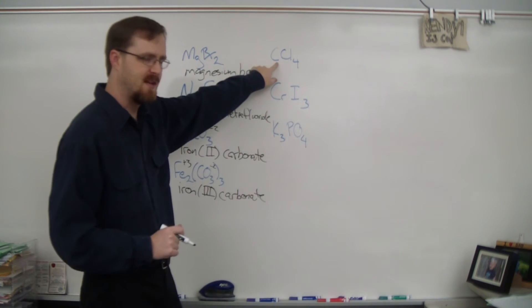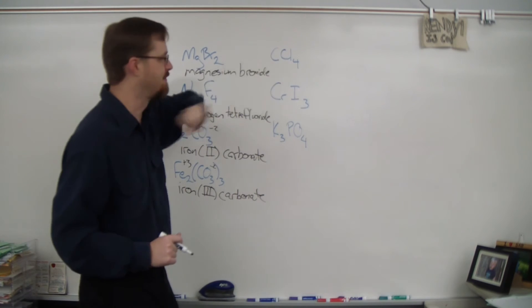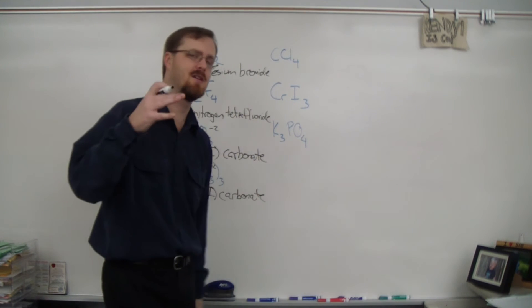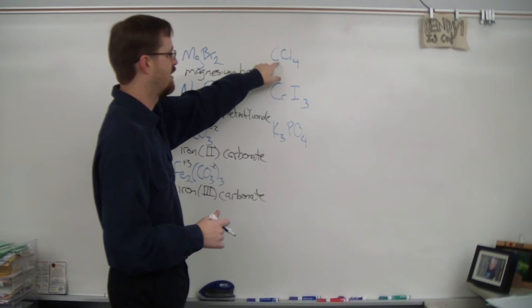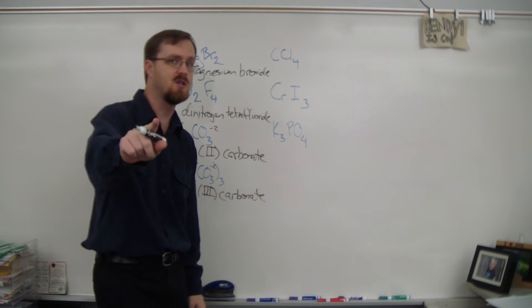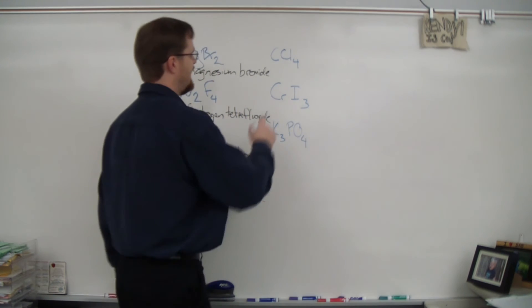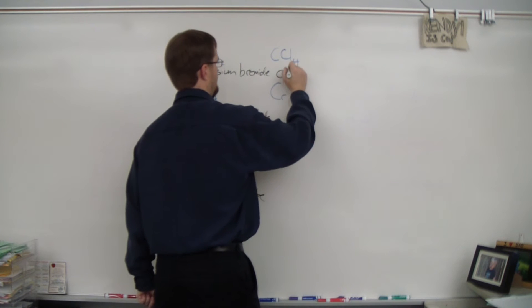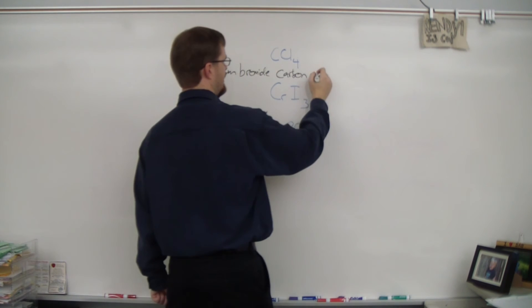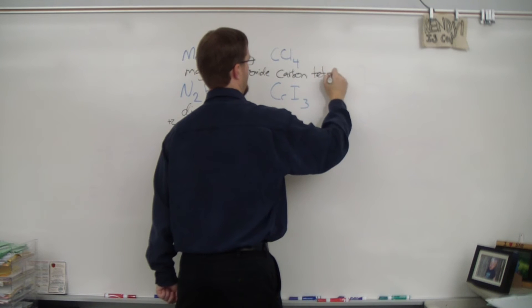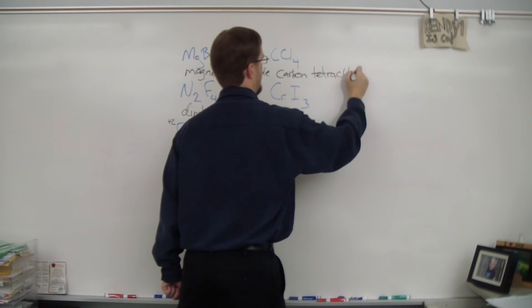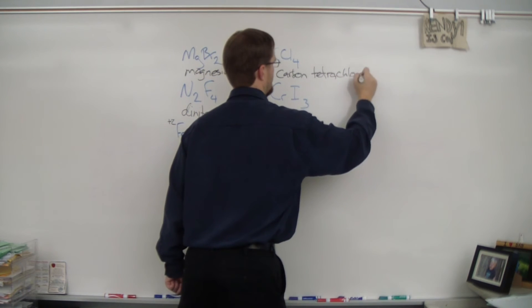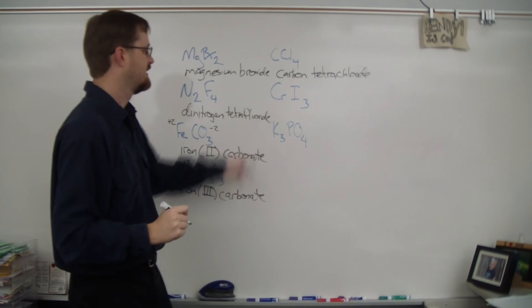Here we go. CCl4. Is the first element a metal? Well, carbon is a non-metal, so therefore this is going to be another covalent. And our subscript here is 1, but remember we don't put mono on the first name, so we're going to write carbon. And then 4 is tetra. So carbon tetrachloride, just like that.